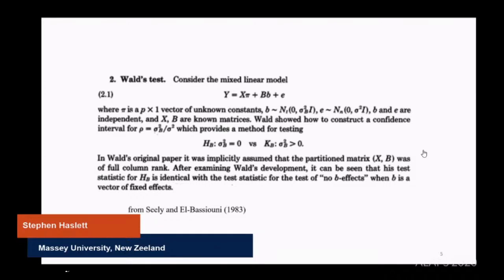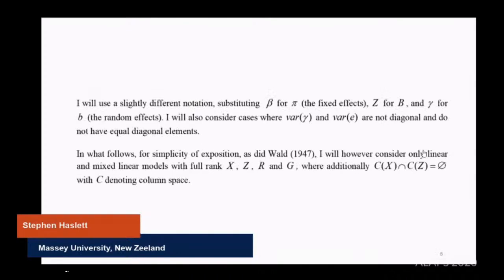That's the core idea. How close is using fixed parameters for b and testing whether they're zero to testing whether b is random and those parameters are zero. I'm going to use slightly different notation: substitute beta for pi, z for b, and gamma for small b. I'll also consider cases where variances of the random effects and error aren't diagonal. However, I'll consider only models where I've got full rank and where the column spaces of X and Z don't intersect.